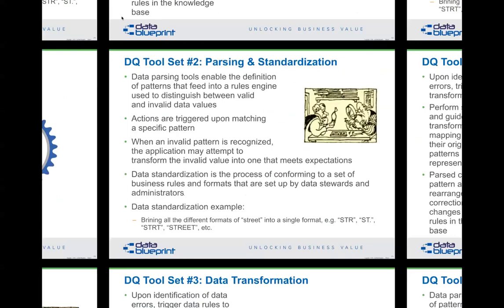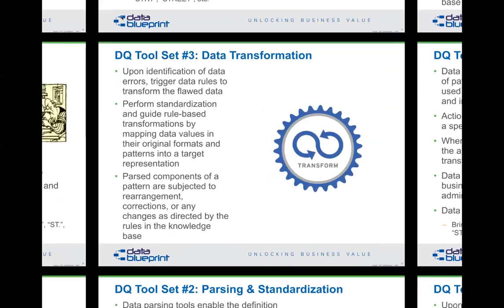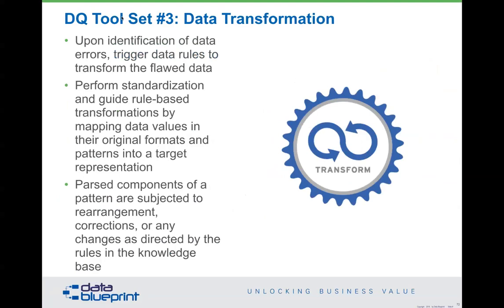The third tool category is transformation — ETL (Extract, Transform, Load). This is what you use to fill data warehouses, move data from place A to place B, and perform high-speed data transfers. Stuff comes from one organization in one format and needs to arrive somewhere else in a different format — ETL handles that.